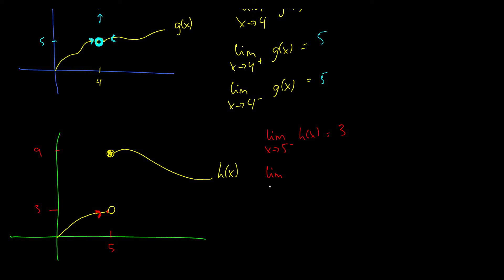And what about five from the right of our function h of x? Well, it goes here, and it's defined at five. So that equals nine. Okay, that's cool. And of course, let's have the information here that h of five is equal to nine.